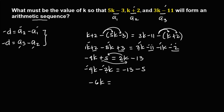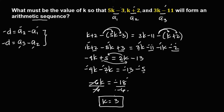Then equals: on the right side, negative 13 and negative 5 — same sign, just copy the sign and add the numbers: 13 plus 5 is 18, so negative 18. To solve for k, divide both sides by negative 6. Cancel, so k equals negative divided by negative, that's positive, and 18 divided by 6. So k is equal to positive 3.